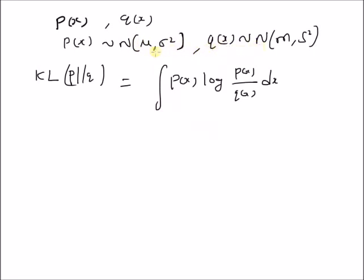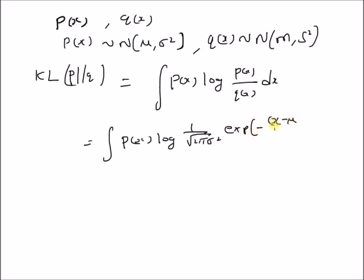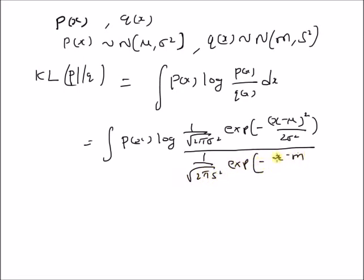So now by plugging in the definitions of the normal distributions of P of x and Q of x, we have the integral of P of x times the logarithm of: 1 over square root of 2 pi sigma square, exponential of minus x minus mu whole square by 2 sigma square, divided by 1 over square root of 2 pi s square, exponential of minus x minus m whole square divided by 2 s square, dx. The two constants cancel and we are left with sigma square by s square.